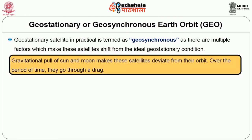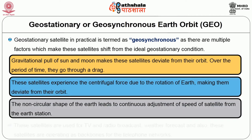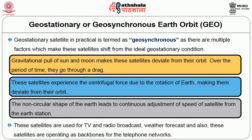Geostationary satellites in practice are termed geosynchronous as there are multiple factors which make these satellites shift from ideal geostationary conditions. Gravitational pull of the sun and moon makes these satellites deviate from their orbit, and over a period of time they go through a drag. These satellites experience the centrifugal force due to the rotation of earth, and the non-circular shape of earth leads to continuous adjustment of speed from the earth station. These satellites are used for TV and radio broadcast, weather forecast, and also operate as backbones for telephone networks.